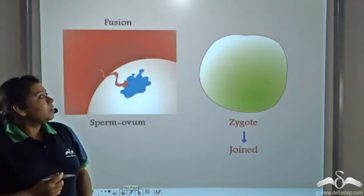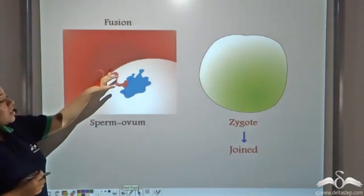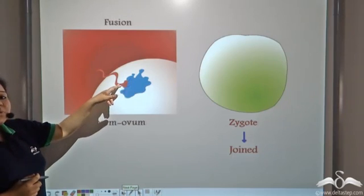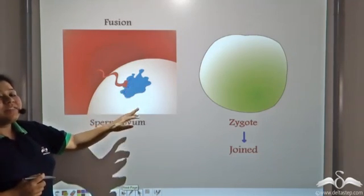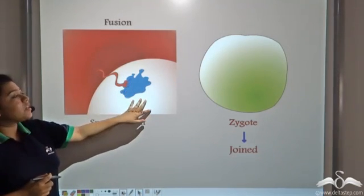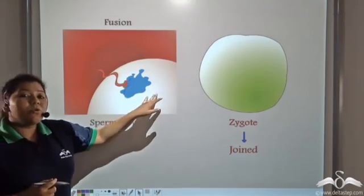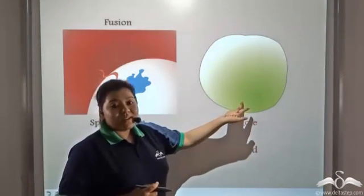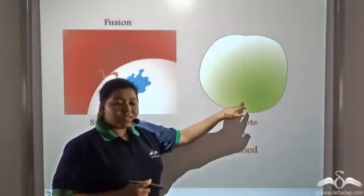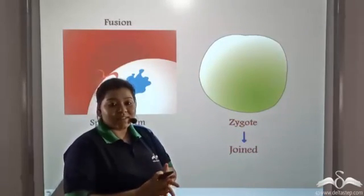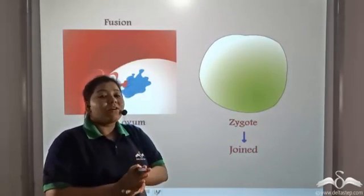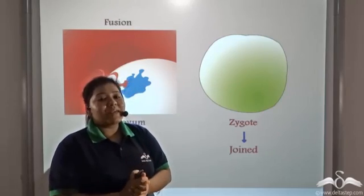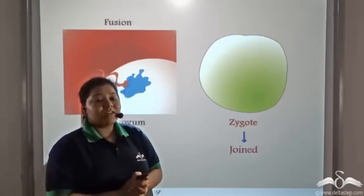The fusion of the male reproductive cell known as the sperm and the female reproductive cell known as the ovum forms a zygote. Zygote means joined, so it is the joining or the fusion of the male and the female reproductive cell.